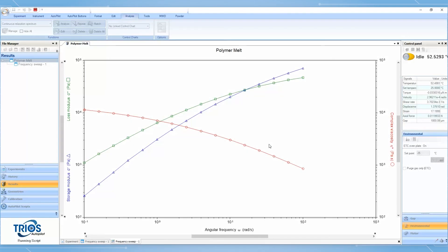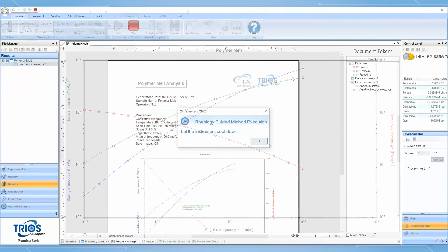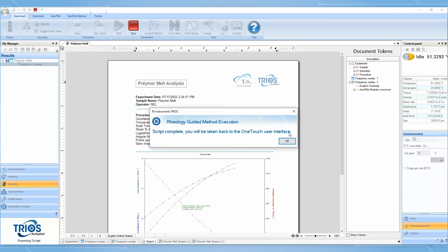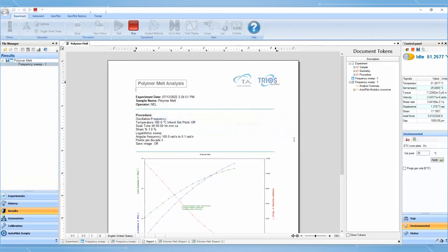After the test is done, the Guided Method will automatically apply an analysis template and report key performance indicators, such as the crossover frequency and modulus, which can be correlated with the molecular weight and molecular weight distribution.